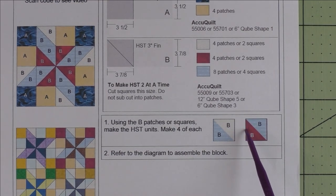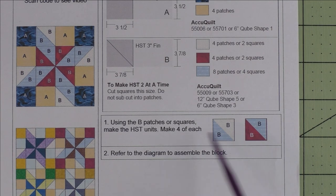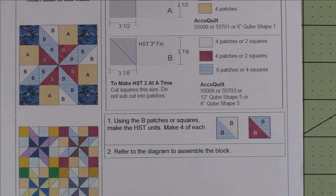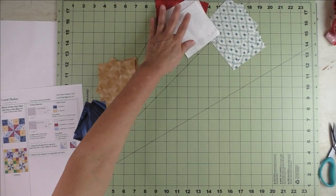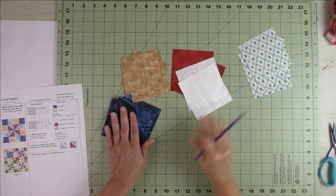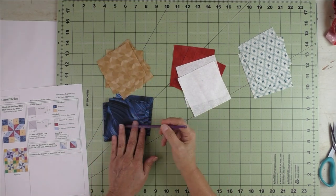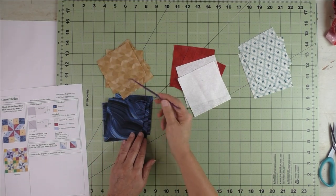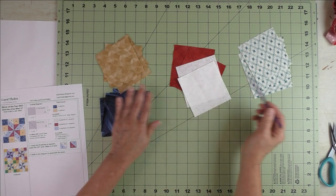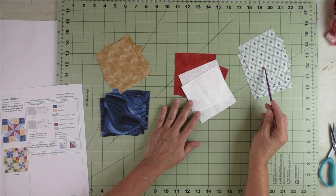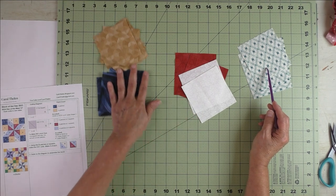We're just going to sew the half-square triangles together. Then we're going to sew the block together. Here are all of our squares, and we just cut squares for this block. These are patch A, the three-inch finished squares. These are patch B, the three-inch finished half-square triangles.